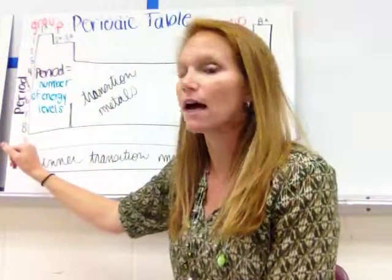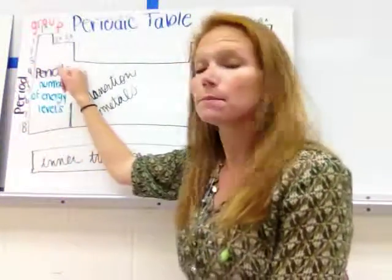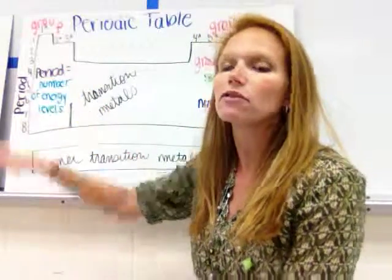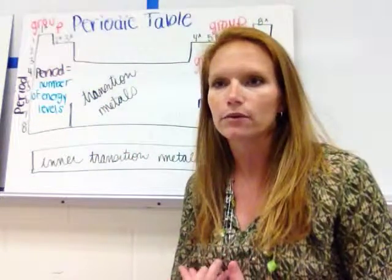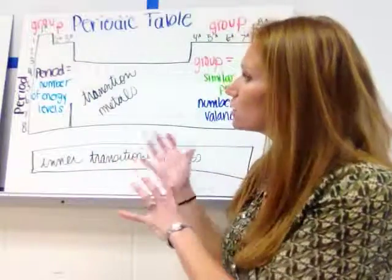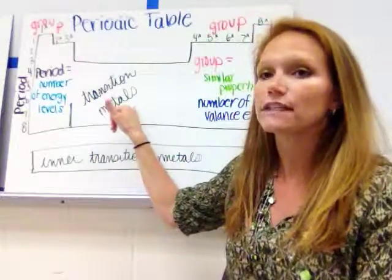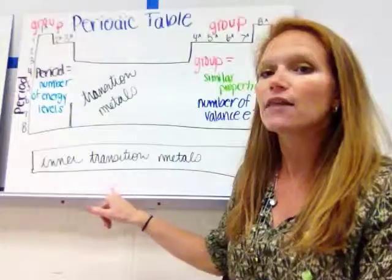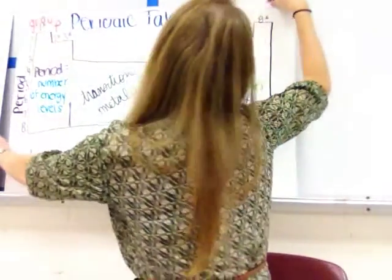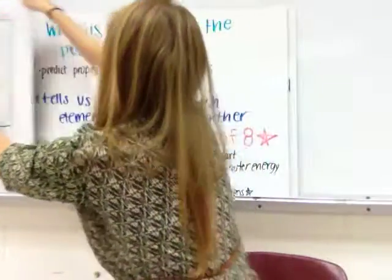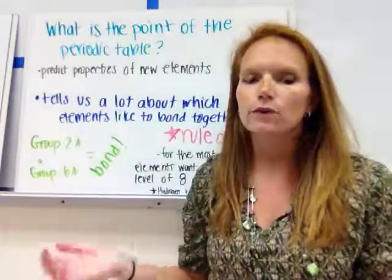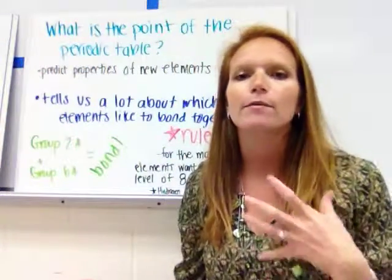The numbers on the side are the period numbers, which tell you the number of energy levels where those valence electrons are located. There are also two big sections we don't go into too much detail about: the transition metals and the inner transition metals.